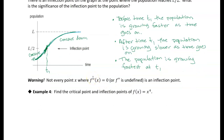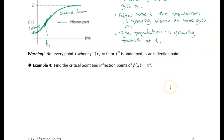Not every point where the second derivative is zero is an inflection point — we have to test it. You can't just find where the second derivative is zero and conclude it's an inflection point. You have to put values into the second derivative and check to see whether the concavity is changing on either side of that candidate. Setting the second derivative to zero only gives you candidates for inflection points.